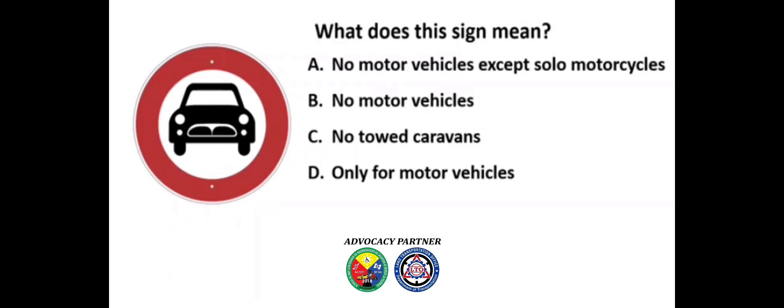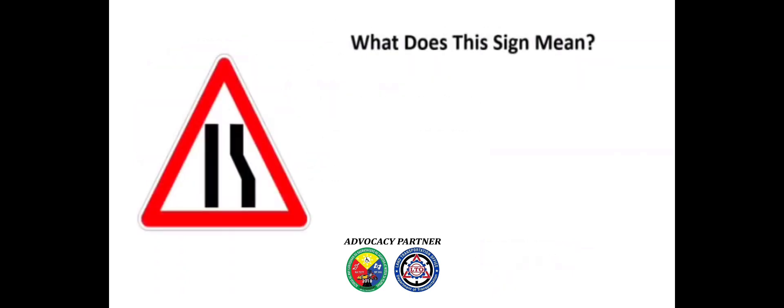What does this sign mean? A) No motor vehicles except solo motorcycles, B) No motor vehicles, C) No towed caravans, D) Only for motor vehicles. Answer: A) No motor vehicles except solo motorcycles.